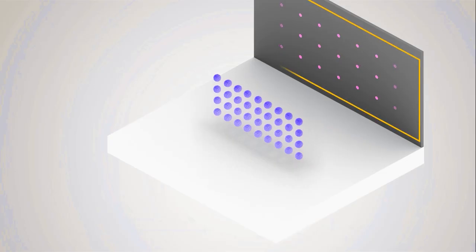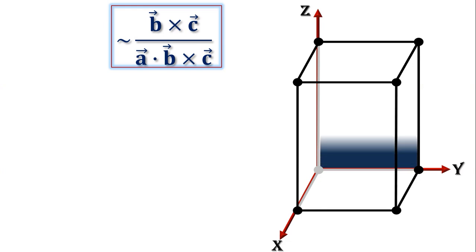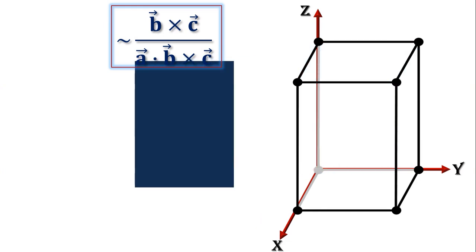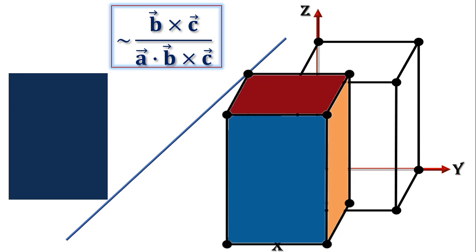The diffraction pattern will directly relate to that one by a, or more technically speaking, b cross c - that is the area in the y-z plane - divided by a dot b cross c, the volume. So that will be actually one by a.